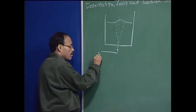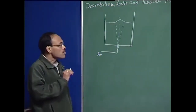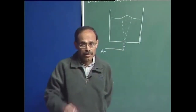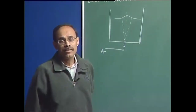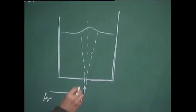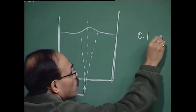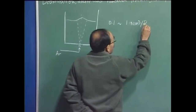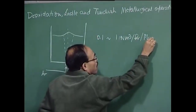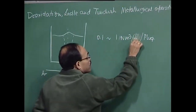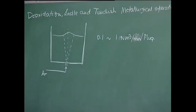So, we are injecting argon through the nozzle. The injected flow rate of argon through the central nozzle varies over a wide range and it is substantially smaller than the flow rates of oxygen that we use for steelmaking or primary steelmaking processes. The value is about 0.1 to 1 normal meter cube per minute per plug. This is the least flow rate and this is the maximum flow rate.